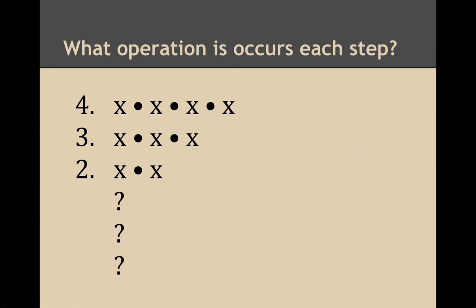So let's just take a look at these expressions. Each line is a different expression, and I've just arbitrarily labeled them starting expression 4, then expression 3, and then 2. So what I'm asking you to do here is, what is the operation that I'm performing each time to go from one expression to the next?